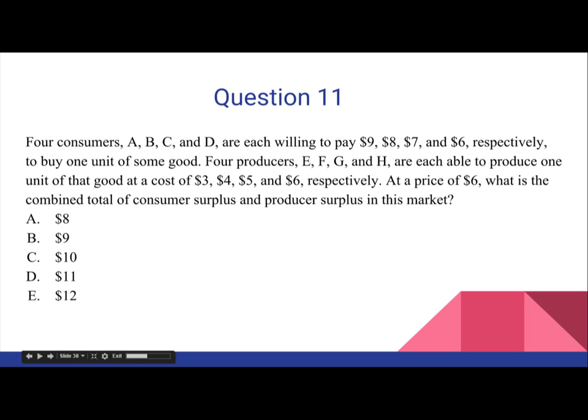Question 11. Four consumers A, B, C, and D are each willing to pay $9, $8, $7, and $6 respectively to buy one unit of some good. Four producers E, F, G, and H are able to produce one unit of that good at a cost of $3, $4, $5, and $6 respectively. At a price of $6, what is the combined total of consumer surplus and producer surplus in this market?